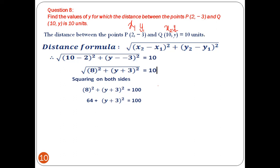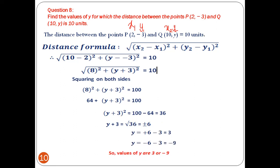Squaring both sides removes the square root: 8² + (y + 3)² = 100. Since 8² = 64, we get (y + 3)² = 100 - 64 = 36. So y + 3 = ±6. Taking +6: y = 3. Taking -6: y = -9. Therefore, values of y are 3 or -9.